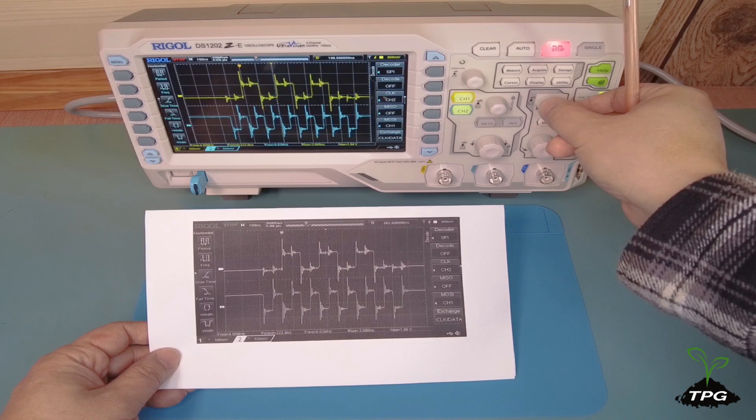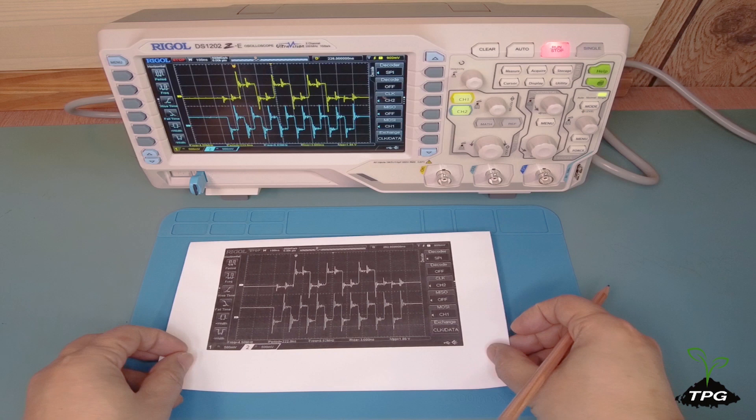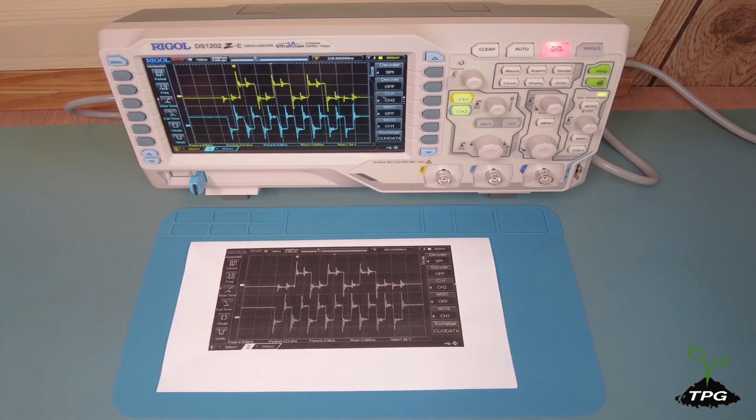Now we start to decode the SPI data signals. First, compare the waveform on the paper to that on the oscilloscope to ensure they match.